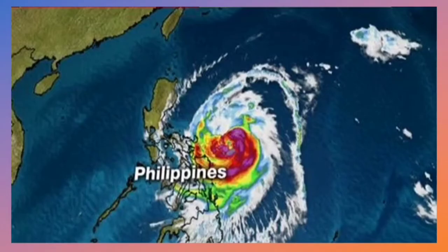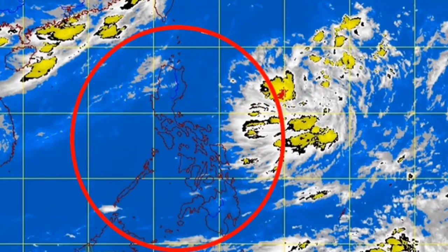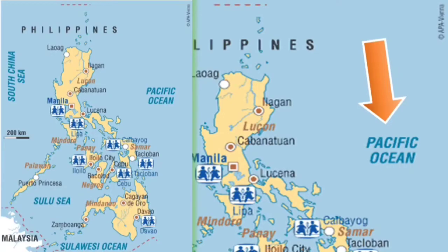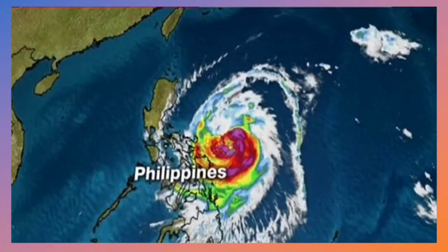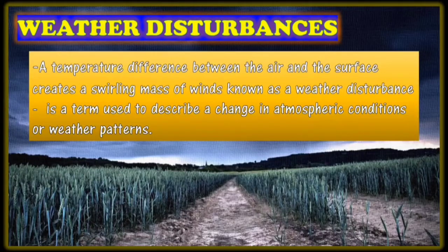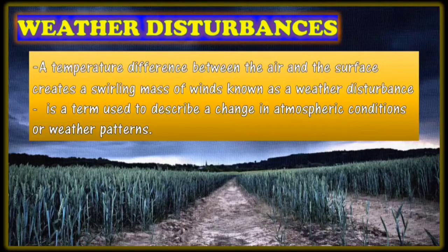In the Philippines, our country is mostly visited by tropical cyclones. We are surrounded by bodies of water, and our nearness to the Pacific Ocean, which lies on the eastern side of our country, is a significant contributor to weather disturbances. According to scientists, it is estimated that there are about 2,000 thunderstorms that occur every hour all over the world, and our country stands out for having the greatest number of typhoons every year. A weather disturbance is a temperature difference between the air and the surface that creates a swirling mass of winds, and it is a term used to describe a change in atmospheric conditions or weather patterns.